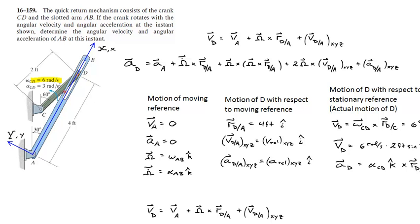What this device actually does is reduce the angular velocity of link AB in the counter-clockwise direction. We have this rotation of 6 radians per second and something slower than AB. What you're asked to do is determine the angular velocity and angular acceleration of AB at this point in time, knowing there's an angle of 60 degrees and 30 degrees for the two linkages.